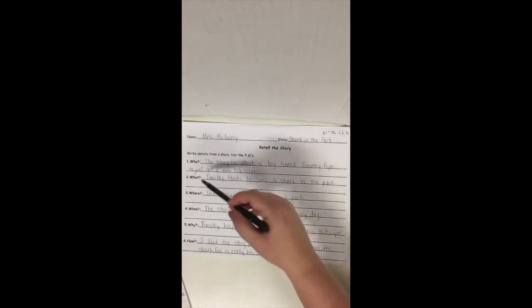Okay. If this is what you turned in, we would be very, very pleased. This is a very good first grade answer. Whenever you're given two lines to write, if you have time, it would be great to go back and add some details. So we can add some details about Timothy Pope. The story is about a boy named Timothy Pope. We can add a detail. What did he just get? He just got a new telescope.